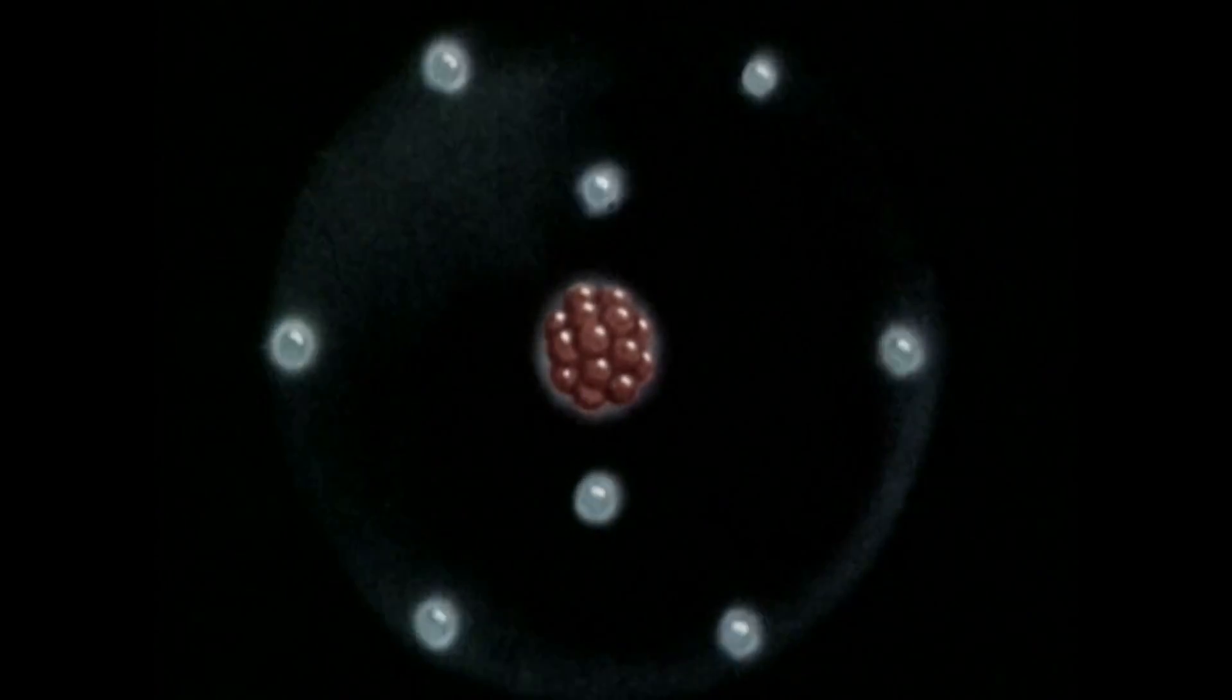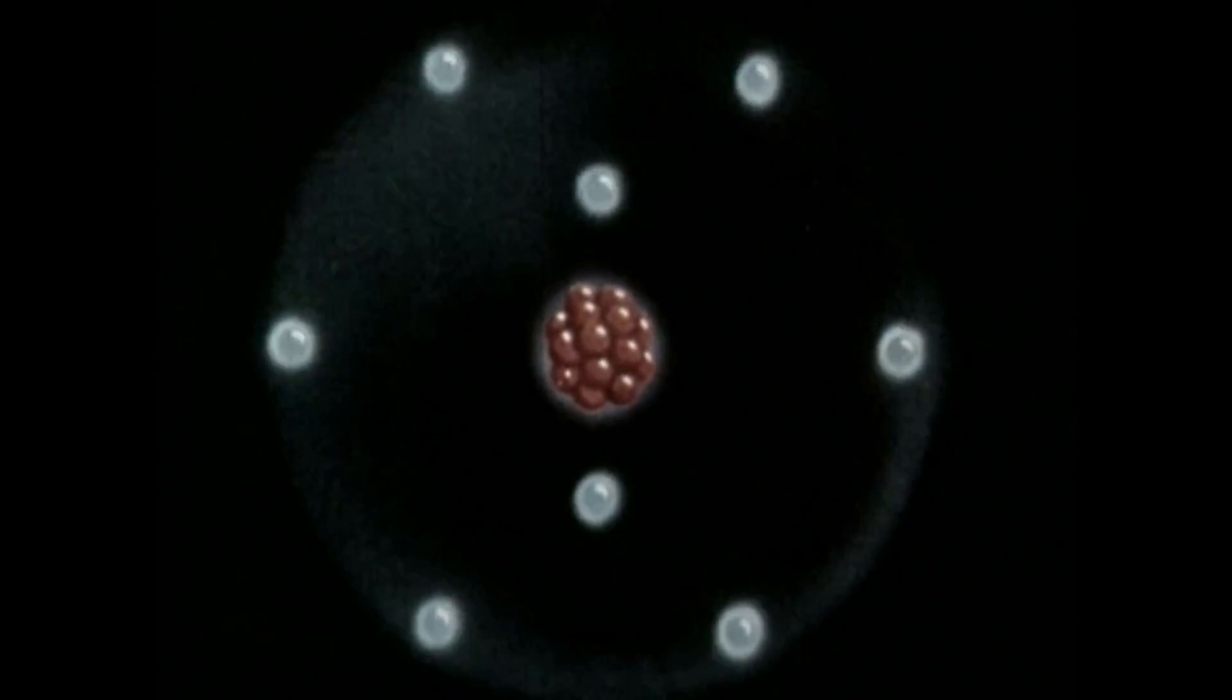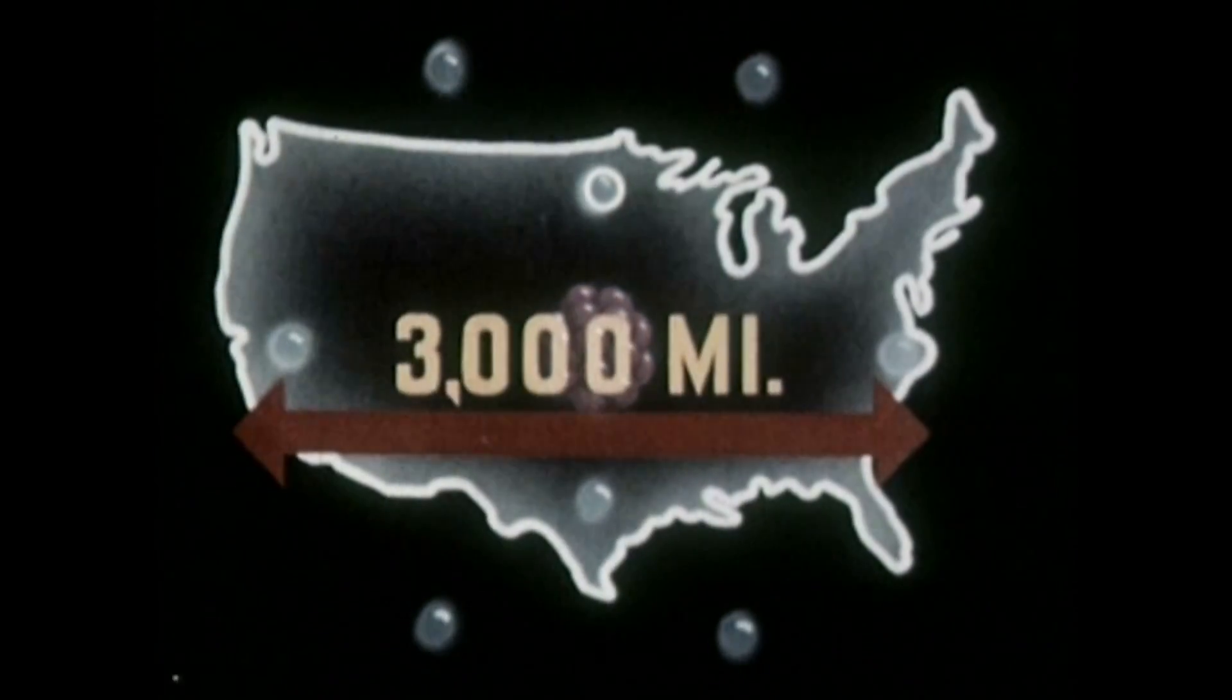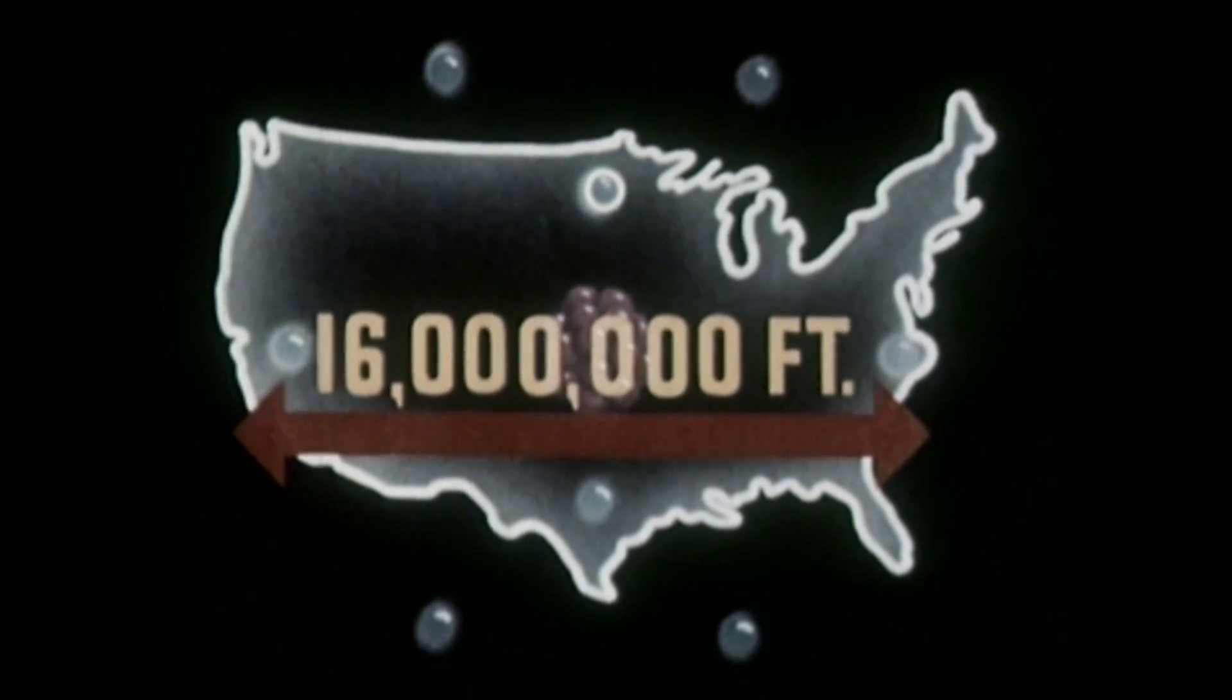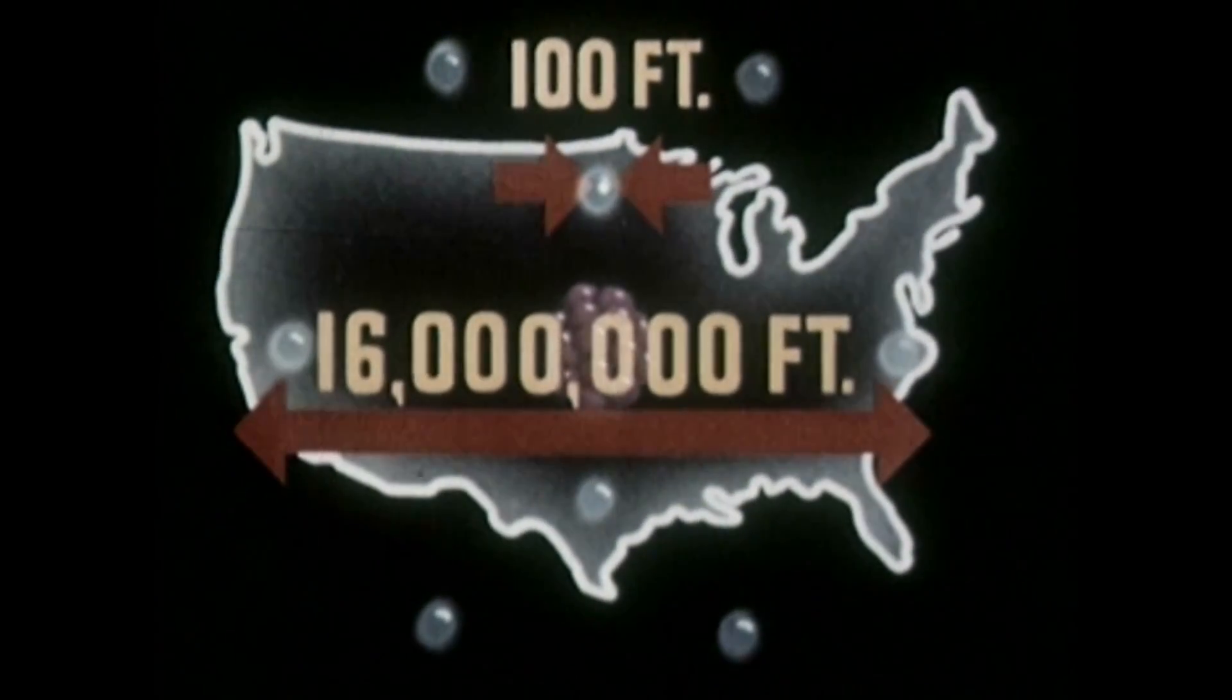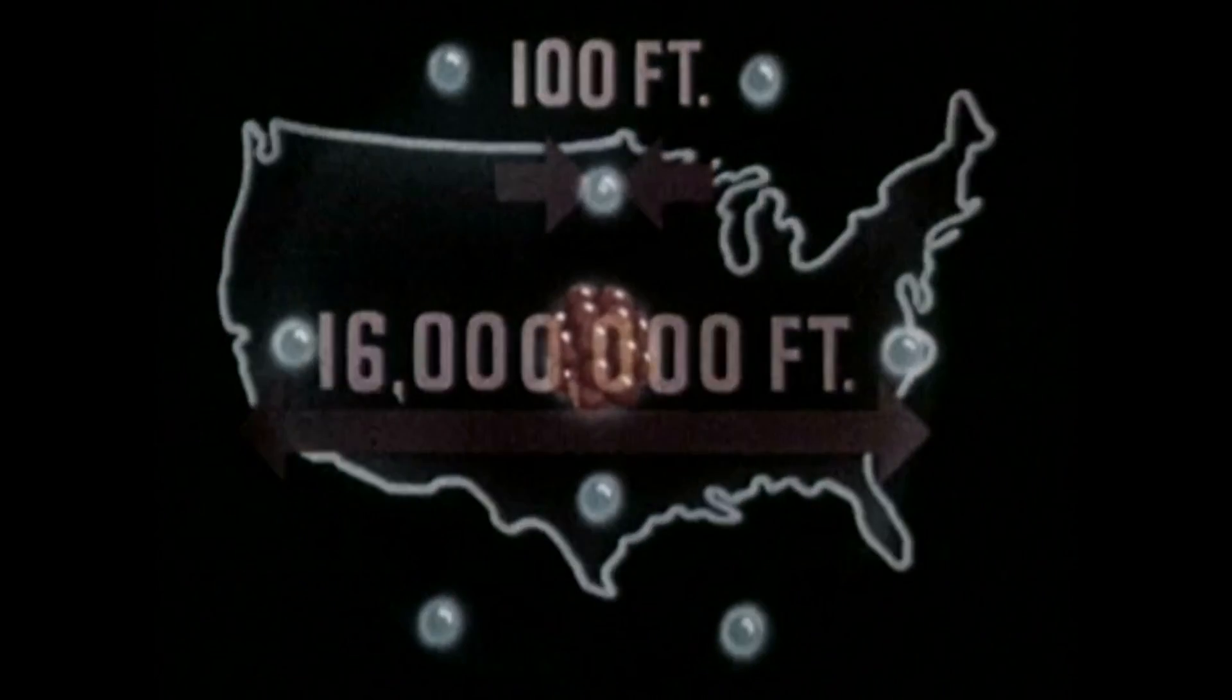It is impossible to show the correct relative proportions of an atom on this screen. For example, if an atom could be as large as the United States, one of its electrons would be only about one hundred feet across. Therefore, to tell our story, we must resort to a symbol.